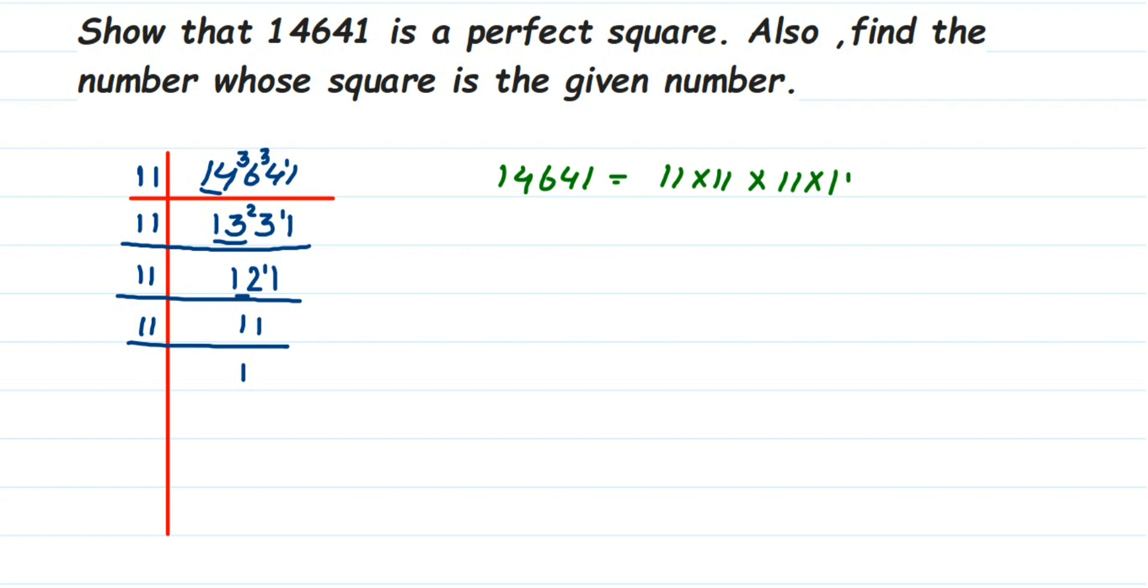When you see the factors, the factors should be in proper pairs. There should be no factor which is left out. You can see this is forming one pair, this is forming one pair. There is no other factor which is left single or which is not having any pair. This means this given number 14,641 is a perfect square number.